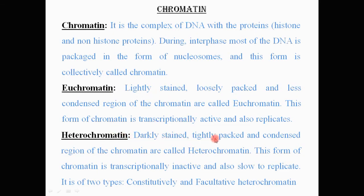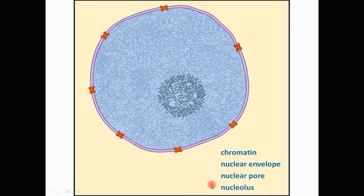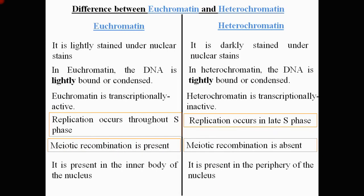Heterochromatin is the darkly stained, tightly packed, and condensed region of the chromatin. This form is transcriptionally inactive and also slow to replicate. There are two forms of heterochromatin: constitutive heterochromatin, which is permanently heterochromatic — like centromeres and telomeres — and facultative heterochromatin, which can switch between hetero and euchromatin states.